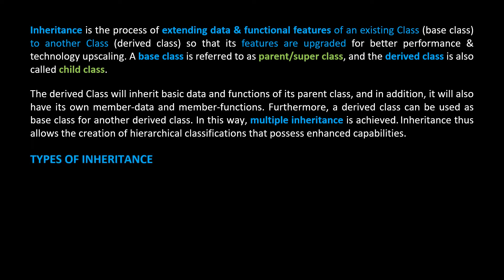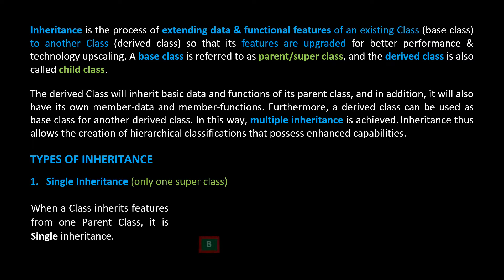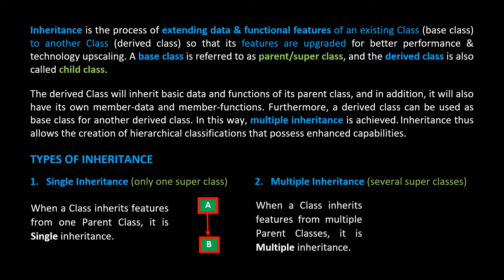Types of Inheritance. 1. Single Inheritance — Only One Super Class: When a class inherits features from one parent class, it is single inheritance. 2. Multiple Inheritance — Several Super Classes: When a class inherits features from multiple parent classes, it is multiple inheritance.